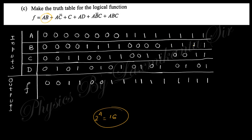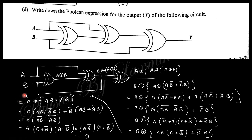Evaluate each term: A·B is 1 when both A and B are 1. A·C-bar is 1 when A is 1 and C is 0. C alone is 1 whenever C is 1. A·B-bar·C is 1 when A is 1, B is 0, and C is 1. A·B·C all equal 1. A·D is 1 when A is 1 and D is 1. All other combinations give 0. This completes the truth table.